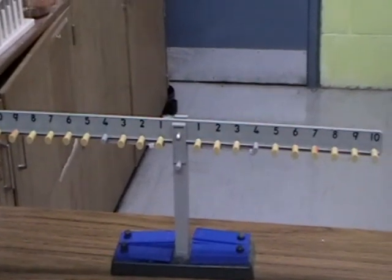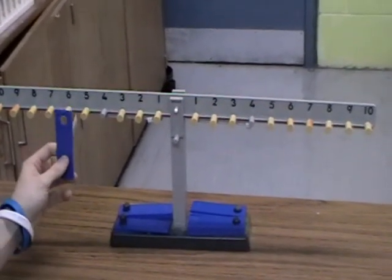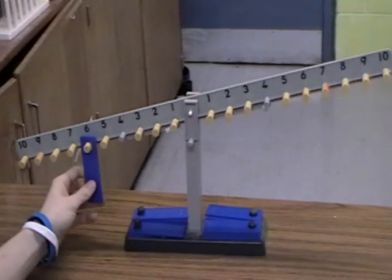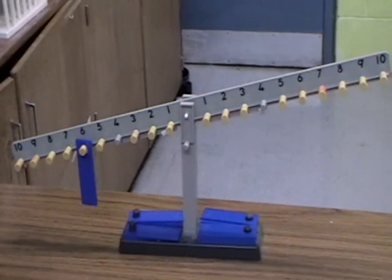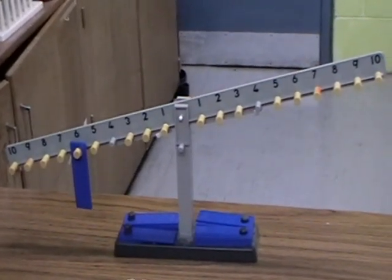A lever is balanced if the sum of the moments is zero. Suppose I place one weight at the 6 mark on the left. The moment is 1 times 6, which is equal to 6 units. How can I balance this lever?